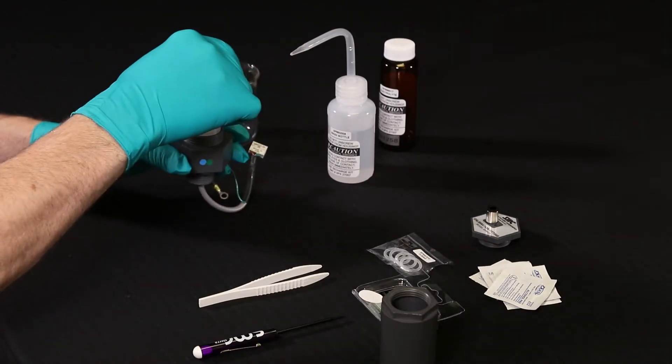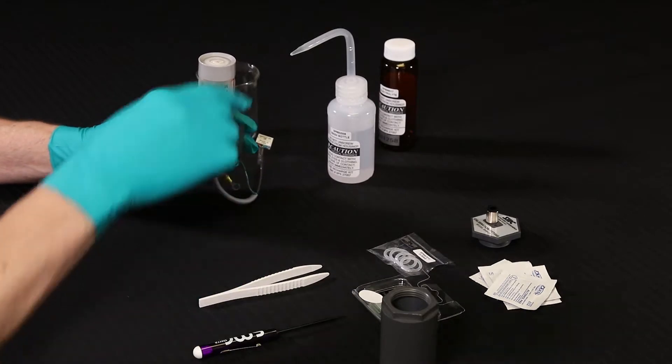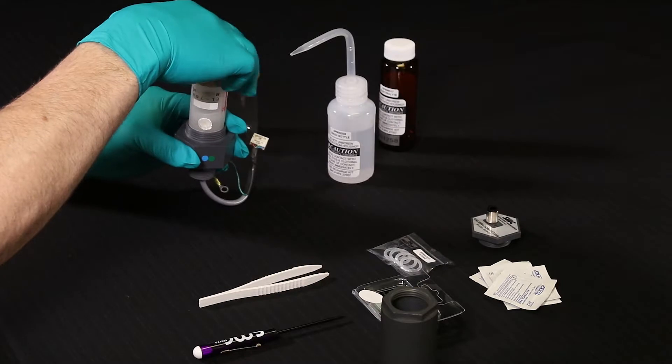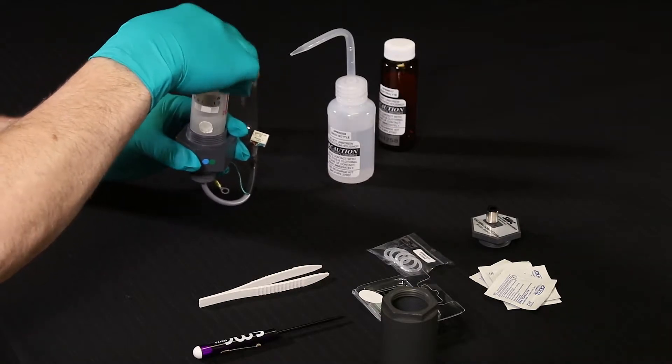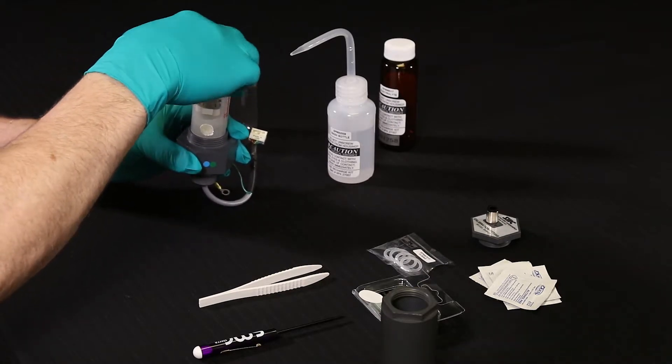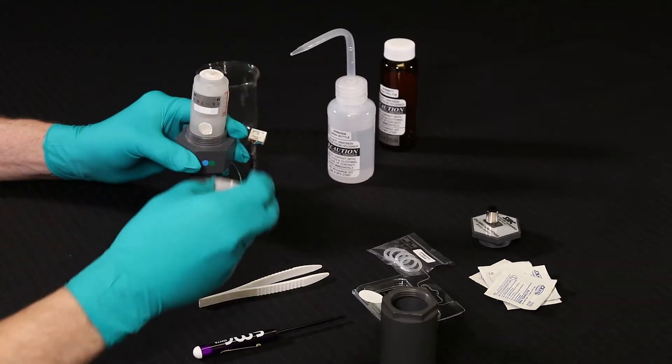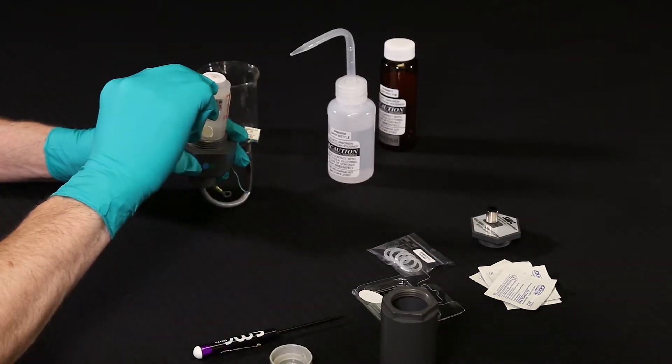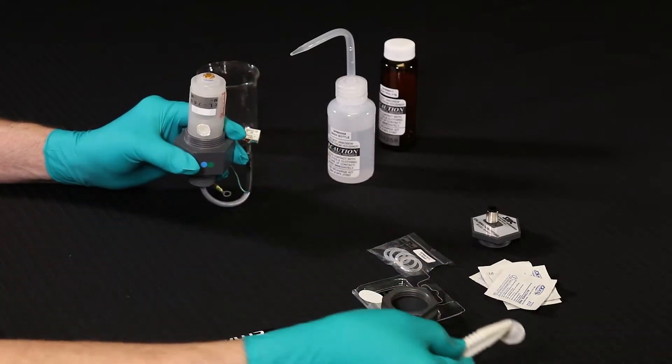Then, invert the sensor assembly so the membrane is facing upwards. Afterwards, unscrew the box nut and remove the retainer ring to expose the membrane. Be sure to remove the old membrane and the O-ring using the tweezers and dispose. Make sure that you do not touch the membrane or the O-ring with your fingers.